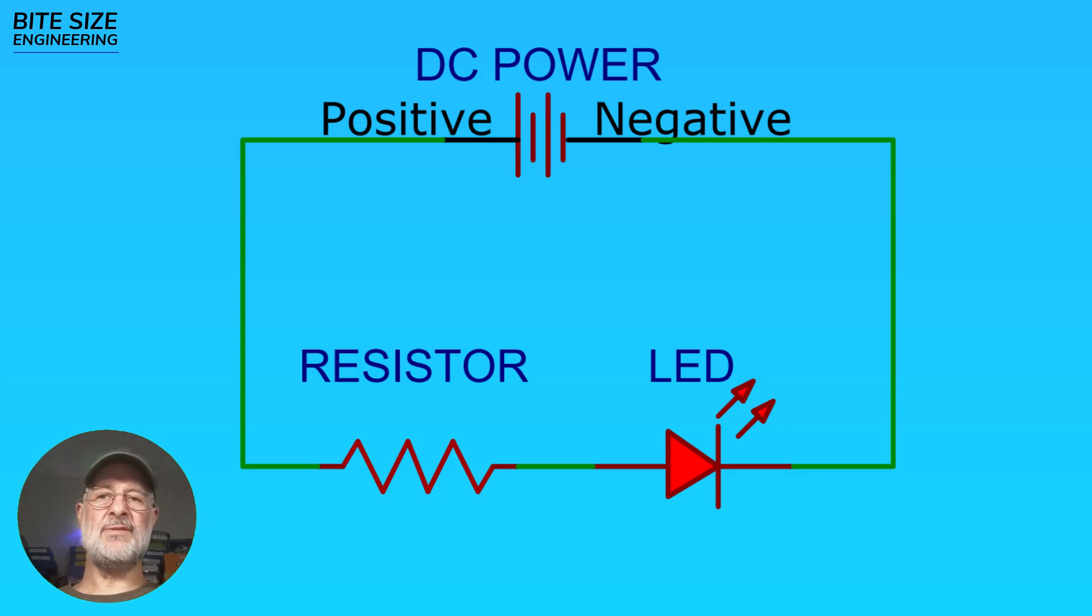Except in certain cases, LEDs are generally wired with one resistor, like this. A properly chosen resistor will limit how much current can go through the LED.